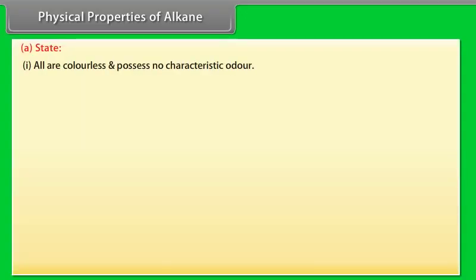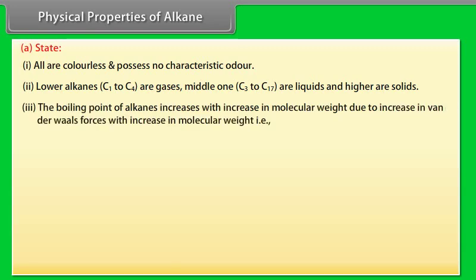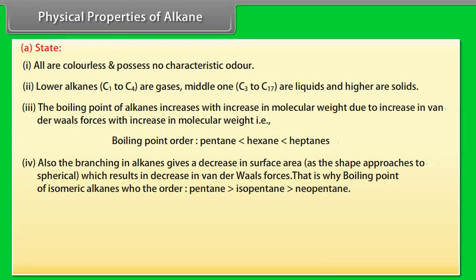Physical properties of alkanes - State: 1. All are colorless and possess no characteristic odor. 2. Lower alkanes, C1 to C4, are gases; middle ones, C5 to C17, are liquids; and higher are solids. Number 3, the boiling point of alkanes increases with increase in molecular weight due to increase in van der Waals forces with increase in molecular weight. That is, boiling point order: pentane is less than hexane is less than heptane. Number 4, also the branching in alkanes gives a decrease in surface area as the shape approaches spherical, which results in decrease in van der Waals forces. That is why boiling point of isomeric alkanes: pentane is greater than isopentane is greater than neopentane.